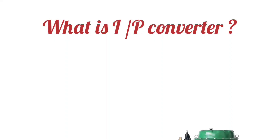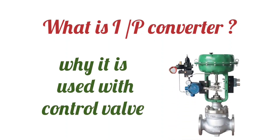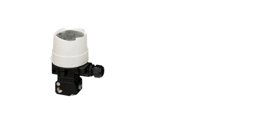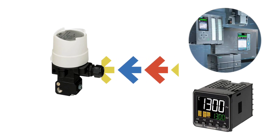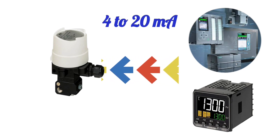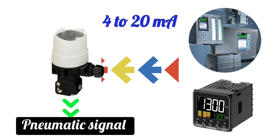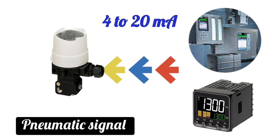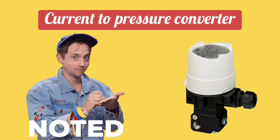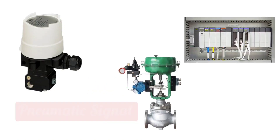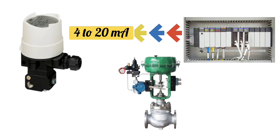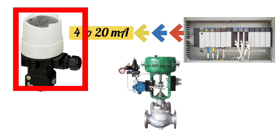What is an I2P converter and why is it used with a control valve? The function of an I2P converter is to convert the current signal coming from a PLC or PID controller — which is 4 to 20 milliamps — into a pneumatic signal. That is why it is also called a current-to-pressure converter. The pneumatic signal from the I2P converter is given to the control valve to make it operate according to the 4 to 20 milliamp signal.